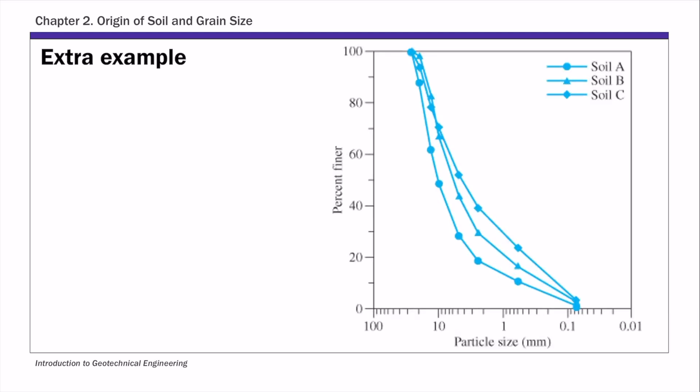To determine the coefficient of gradation and the uniformity coefficient, we need d10, d30, and d60 values. So first, this is Part A: to determine the coefficient of uniformity and coefficient of gradation. To do that, we need d10, d30, and d60 values. Let's start with d10 values.